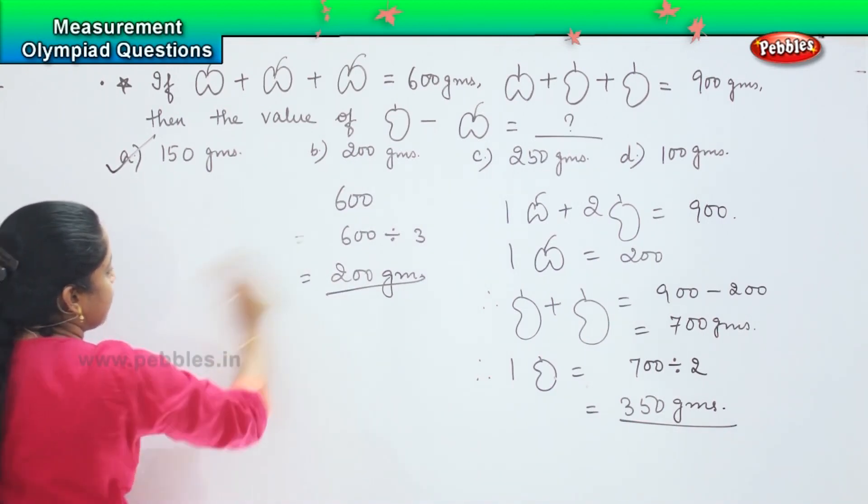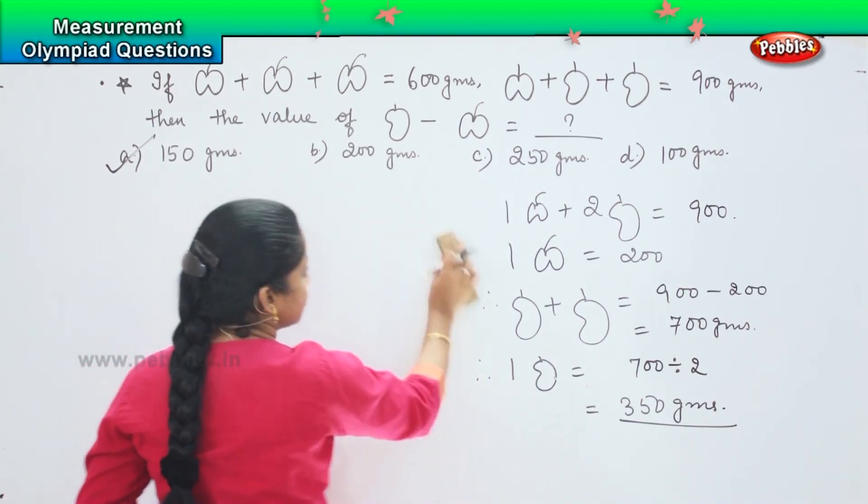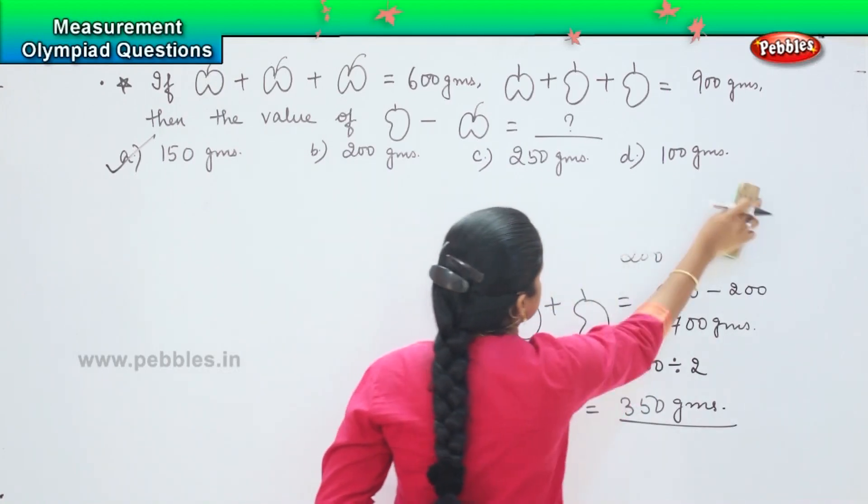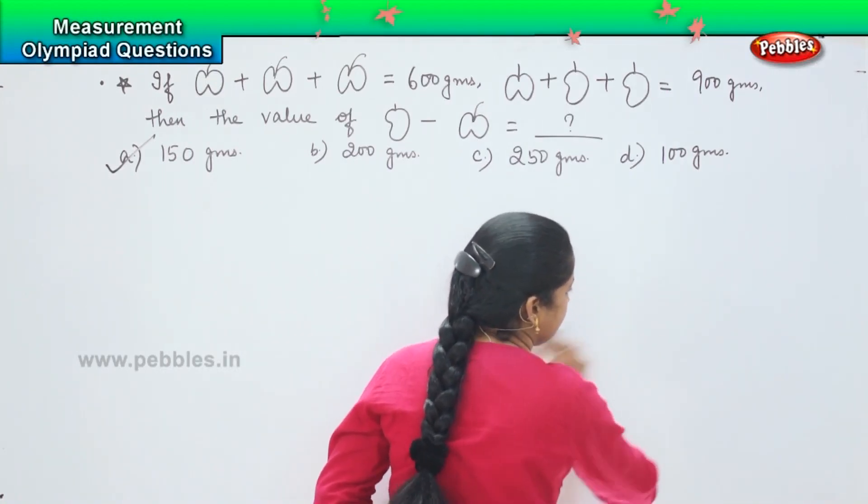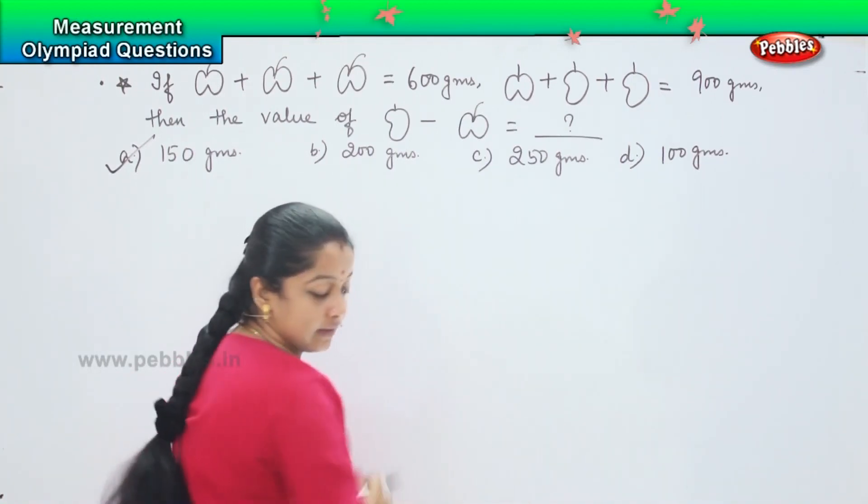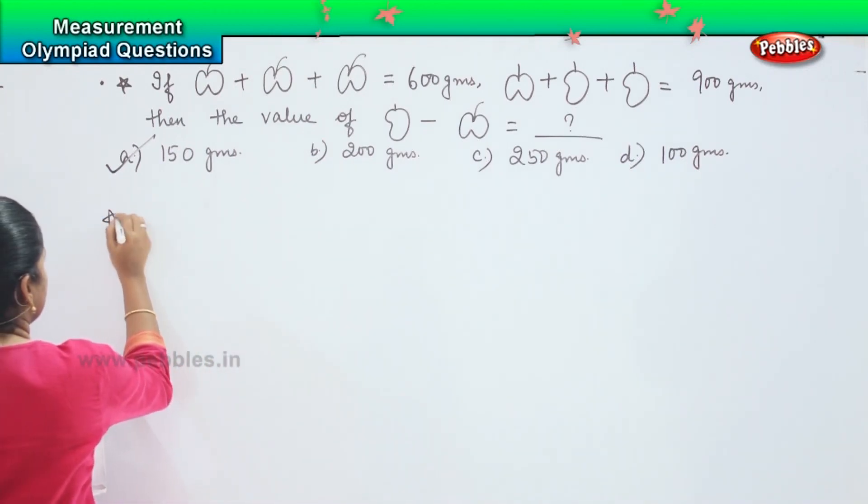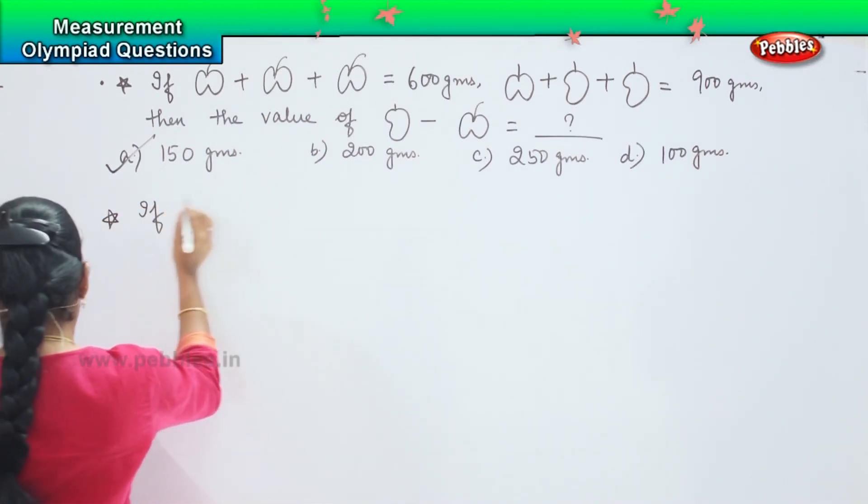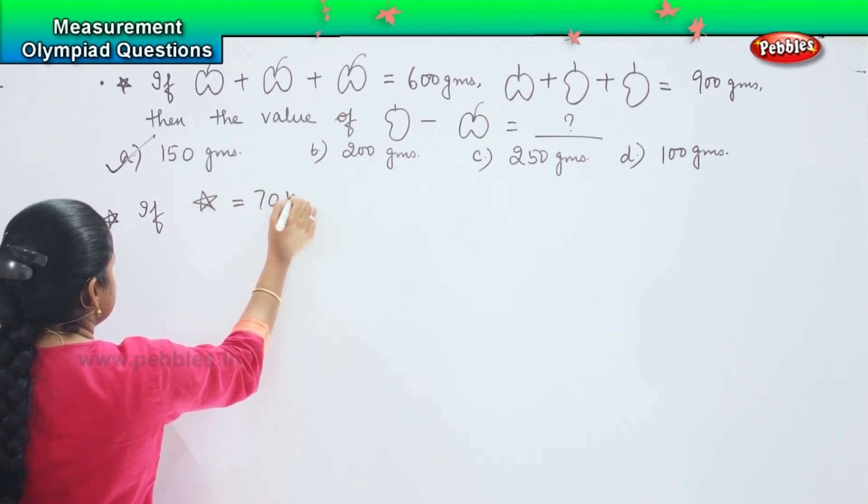Shall we move to the next pattern of question? The next question will also be somewhat tricky like this and you need to first calculate what is given and then we will find out the answer. Now, the next question says if one star equals 70 kilos,